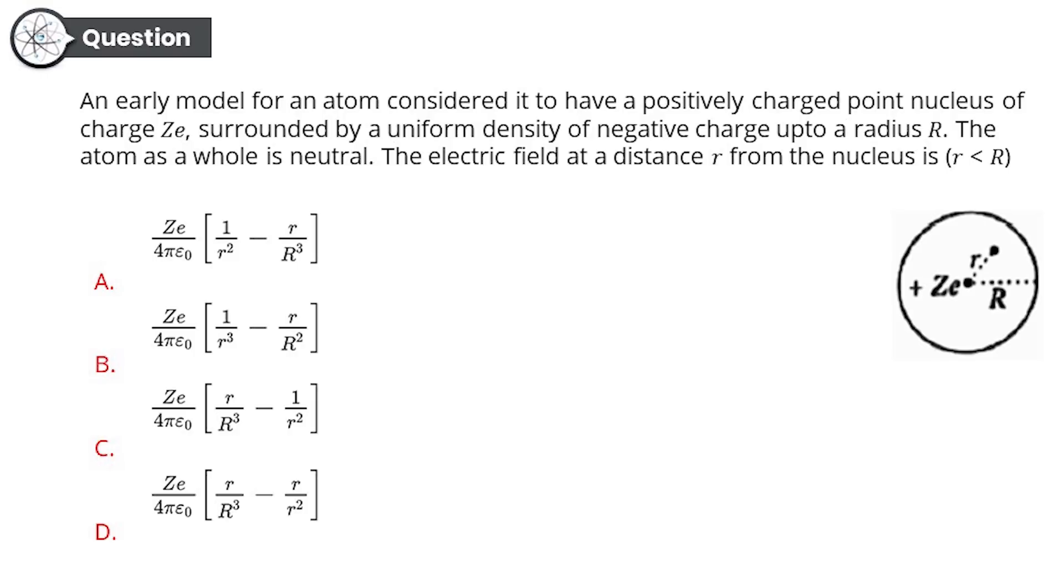Your options are: Option A: Z by 4πε₀ [1/r² - r/R³]. Option B: Z by 4πε₀ [1/r² - r/R²]. Option C: Z by 4ε₀ r/R³. Option D: Z by 4ε₀ [r/R³ - r/r²]. Now a lot of squares, a lot of cubes, and a lot of Rs going on this question, but I hope you will get it right.